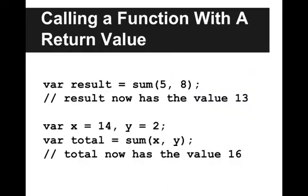So let's look at how we would call a function with a return value. We have var result and that is equal to sum 5 comma 8. So now result has the value 13. A slightly more interesting example, we have var x equals 14 and y equals 2. Now we say var total equals sum x y and total now has the value 16.